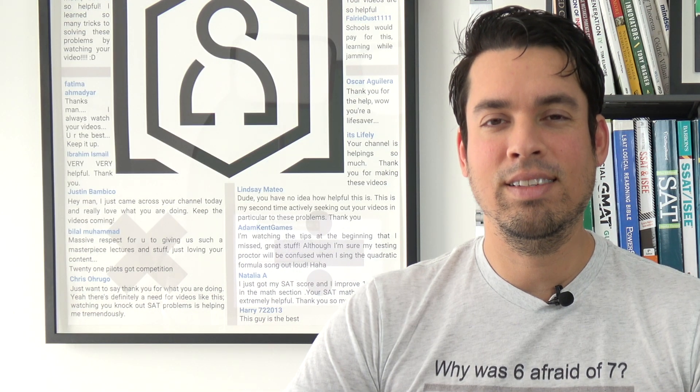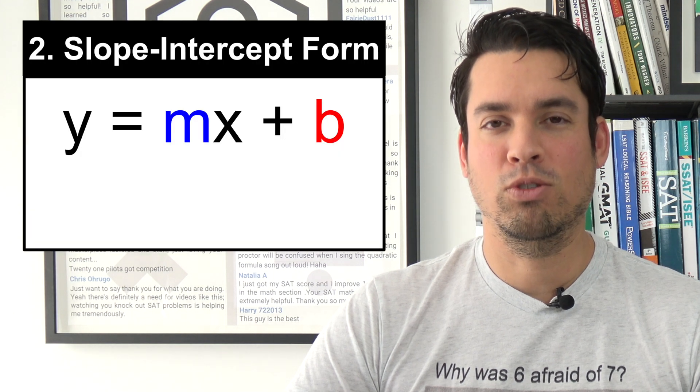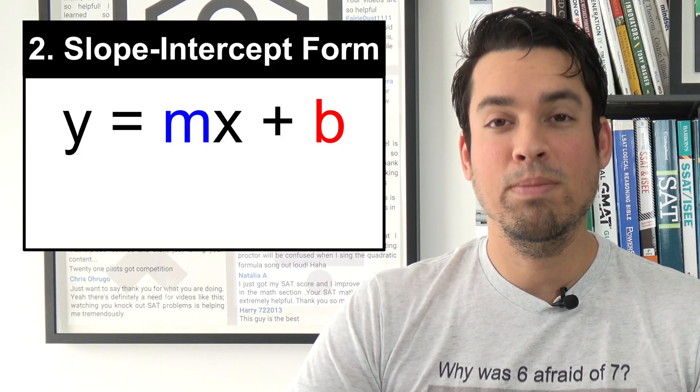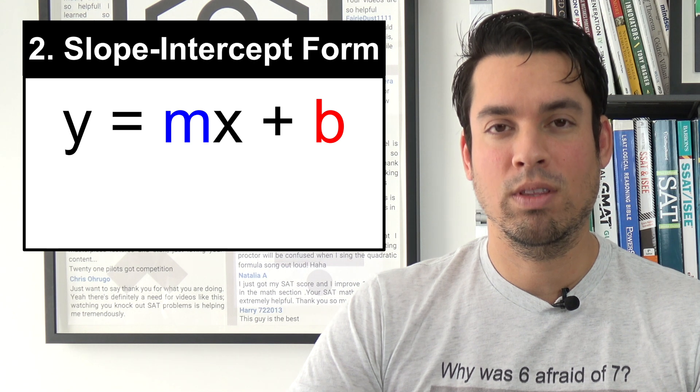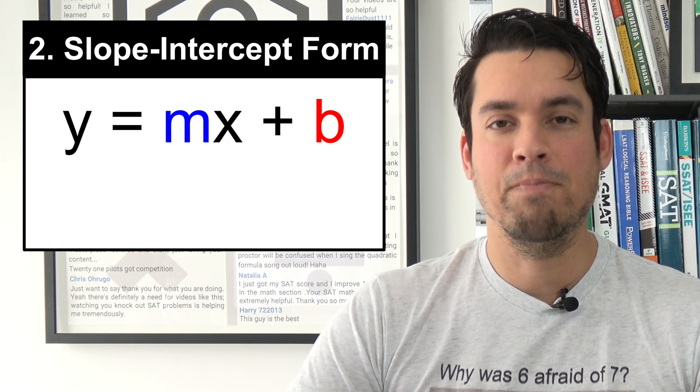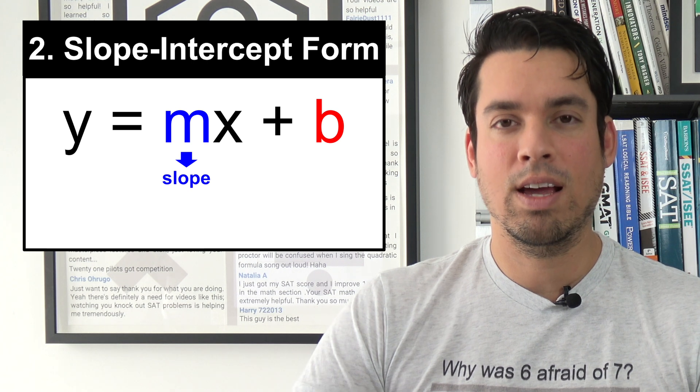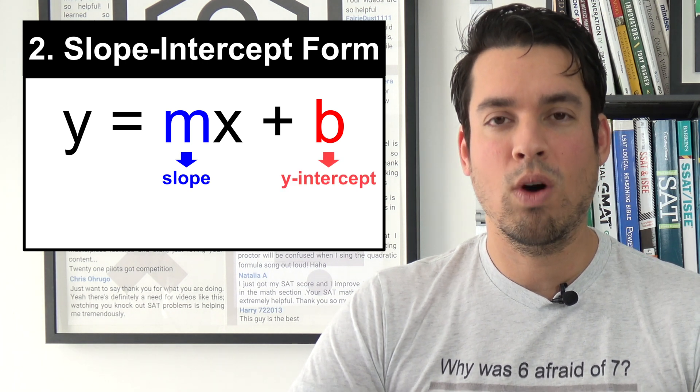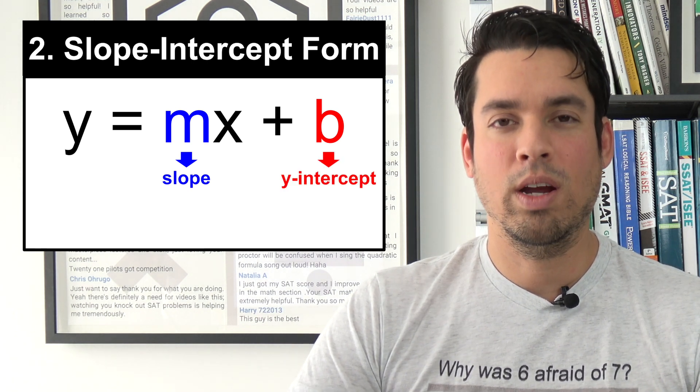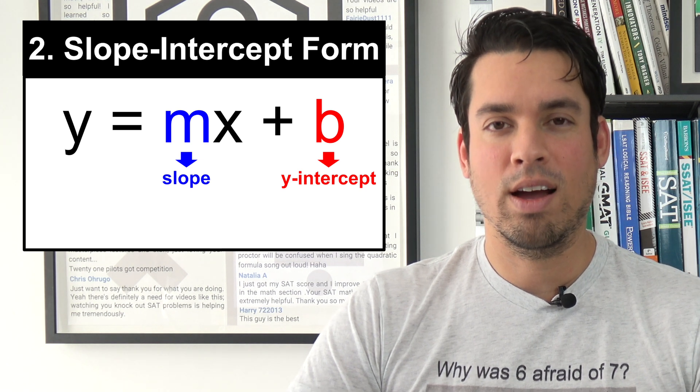The next equation on the list is slope-intercept form. Slope-intercept form is the ultimate and most important formula for the equation of a line. The m value represents the slope of the line and the b value represents the y-intercept, which of course is where this line intersects the y-axis.